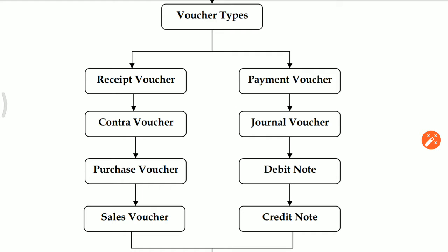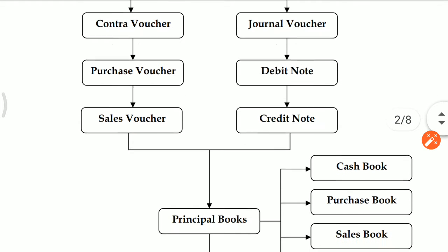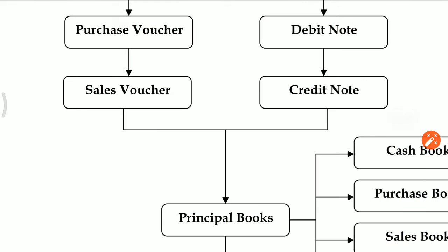Next one is Journal Voucher. In Journal Voucher, adjustment entries are booked. For example, Outstanding Salaries, Provisions for Taxation, FD Interest Receivables — all adjustment entries are booked in Journal Voucher. Please note that in Journal Voucher, cash and bank accounts will not be reflected either in the debit side or in the credit side. Next one is Purchase Voucher. Purchase Voucher means when you purchase goods on credit basis — Purchase Account Debit to Suppliers Account.